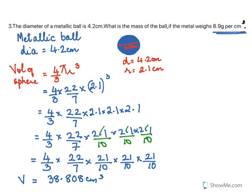Now we need to know the next part of the sum. They said 1 centimeter cube weighs 8.9 grams. Here we have 38.808 centimeter cube. How much would that weigh? Stop and think for a moment.